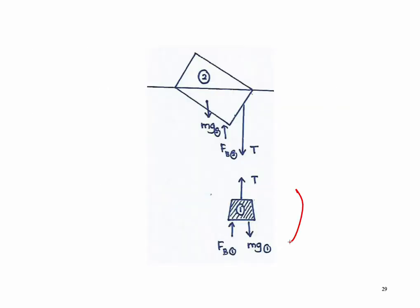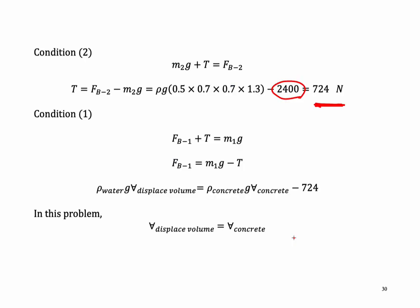For condition one, according to the equation, FB1 plus T is equal to the weight for object one. We can calculate the force of buoyancy acting on object one using the equation with rho, G, and volume. You need to be very careful here, because to calculate the force of buoyancy, the equation uses rho, G, and volume.